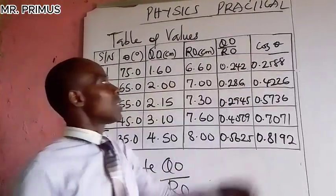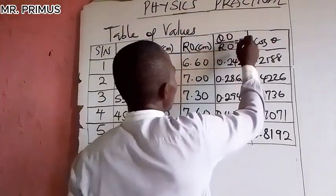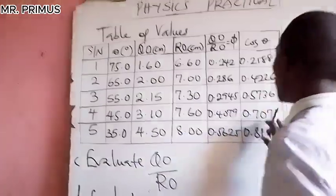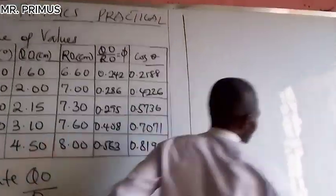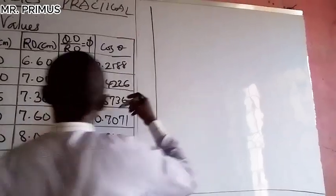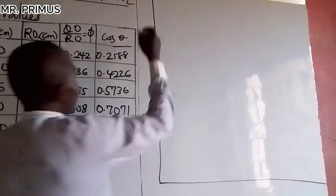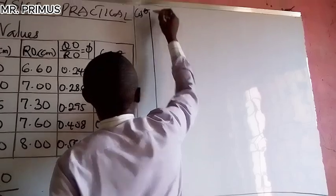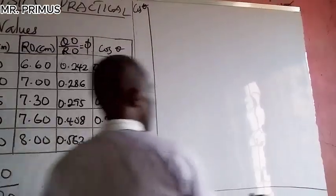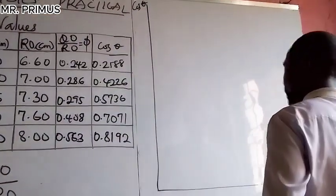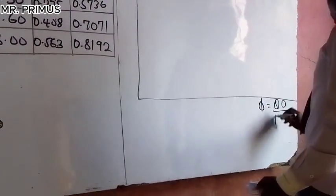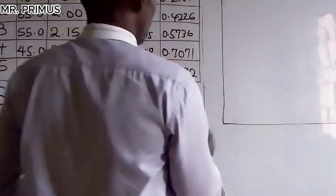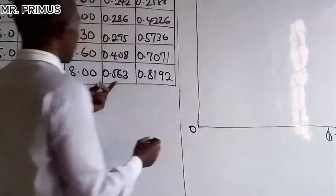Now we are going to plot the graph of these two sets of values against each other. Draw the axes — cos(theta) on the vertical axis. Let's write it here as cos(theta) because of the space, and QO/RO on the horizontal axis.